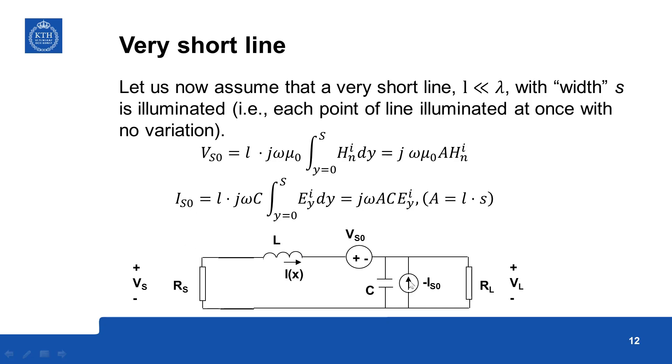Similarly the current, shunt current is L total length times J omega C into integral of 0 to S E Y D Y. So since E Y is uniform you replace this by L times S, small s for the width of the line then you get A here and C, A equal to L times S. So we got the values of both sources.